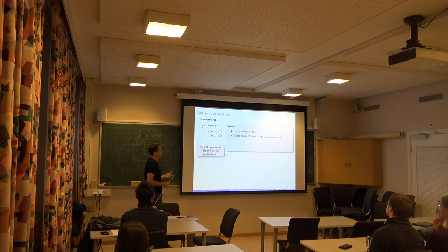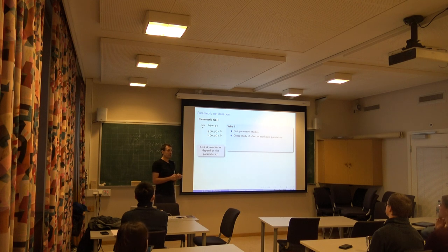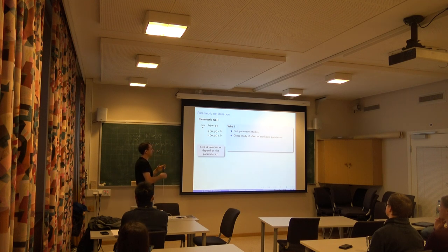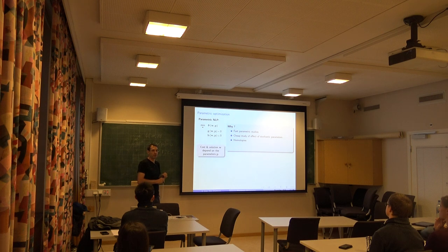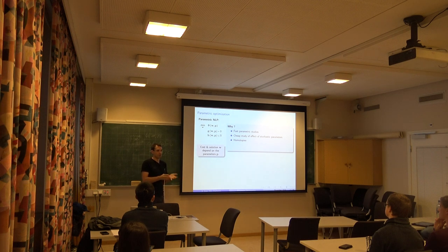There are a number of applications: fast parametric studies, understanding how parameters affect your optimal control solution. You can easily study the effect of stochastic parameters on the solution in an approximate way. For example, if P is distributed according to some distribution, you can study via this the effect of changing P on the solution. Homotopies — that's a very useful trick when you have really difficult problems to solve. We use it in applications where solving the optimal control problem in one shot is impossible: you never get a good enough initial guess and the problem is too non-linear and non-convex.